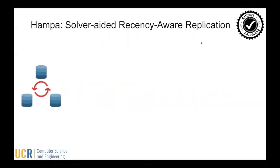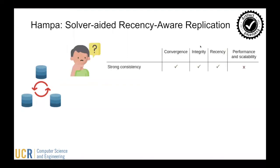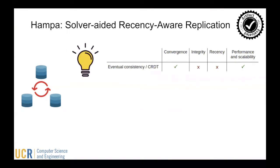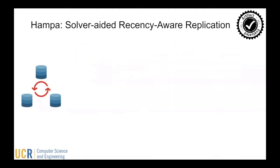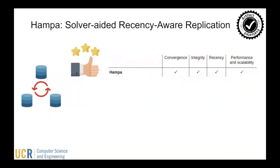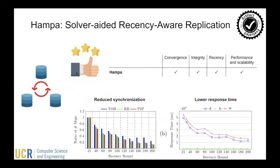Replication is widely used to build reliable and scalable systems. The journey starts from strong consistency, where all replicas have the same totally ordered requests that trivially provides convergence, integrity, and recency. However, the lack of availability and poor performance push people to use weaker notions of consistency. They provide higher performance and convergence, but no integrity and recency guarantees. Recent work uses hybrid models to preserve both convergence and integrity, but they are oblivious to recency and object states can get arbitrarily stale. The recency property bounds the staleness of states. Our project revives recency and provides convergence and integrity at the same time. We observe that recency not only guarantees bounded staleness but also reduces the required synchronization for the other properties. Join us for the talk if you want to know more.